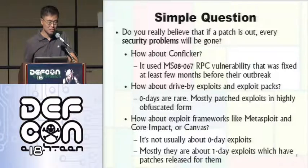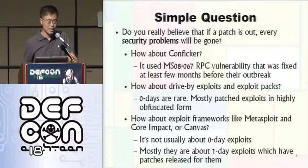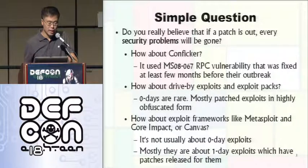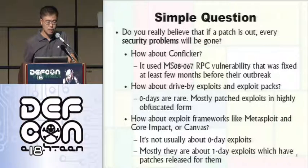Let's look at Conficker. It spread around 2008 or 2009, and it actually used a vulnerability that was patched at least a few months prior. Even though the patch was out, a lot of people didn't patch for some reason. Conficker infected more than eight million computers worldwide.